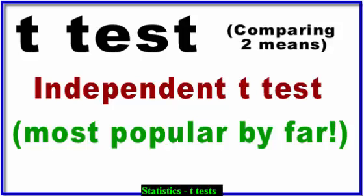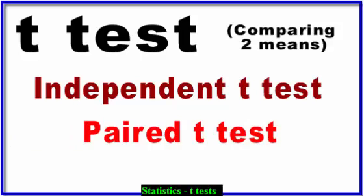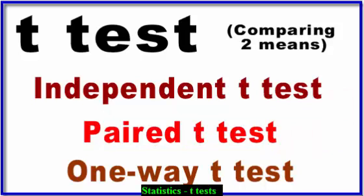95% of the time, you're going to see or run a t-test that is independent. Independent means that each group is separate — whoever's in group A cannot be in group B and vice versa. The second one is a paired t-test, where you have a repeated measure. There's only one group but two measurements. Whenever you think of a pre and a post-test, think of a paired t-test. The last one is the one-way t-test, also called a one-sample t-test, which compares a sample mean to a stated population mean.